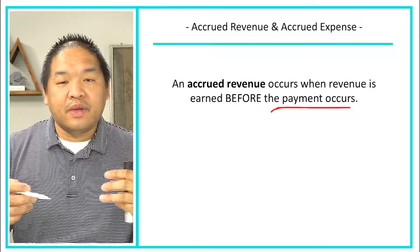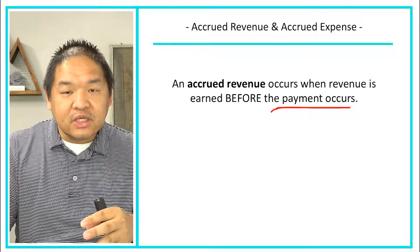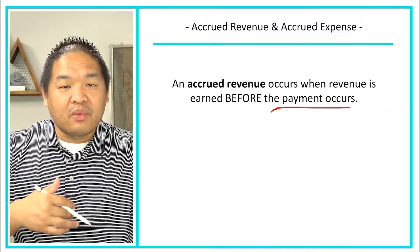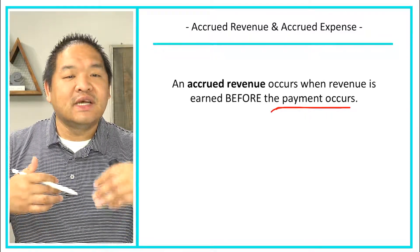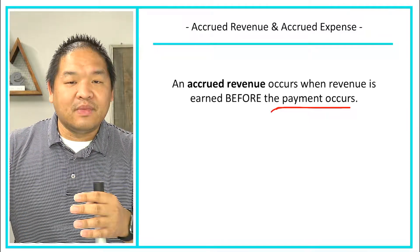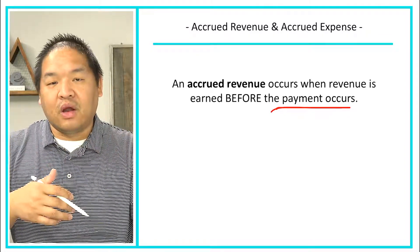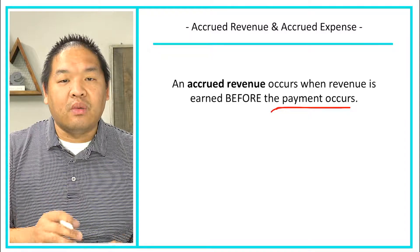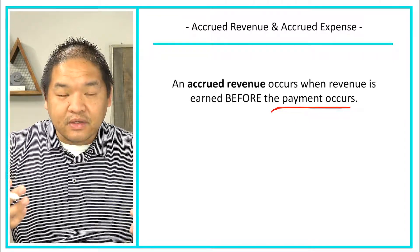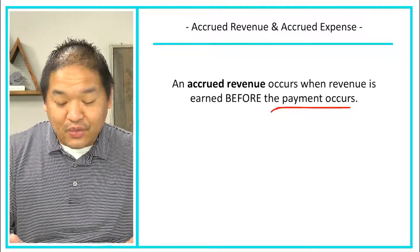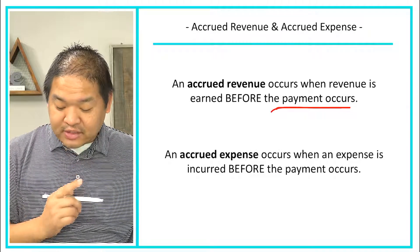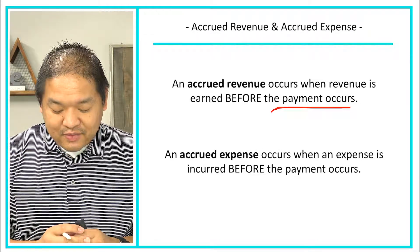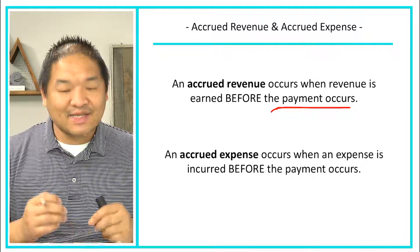For example, Pepsi Cola and Walmart: Pepsi just delivers the goods to Walmart, Walmart accepts the goods and starts selling them, and then at the end of the month Pepsi will bill Walmart for those goods. Pepsi trusts that Walmart will pay their bill when it comes due.